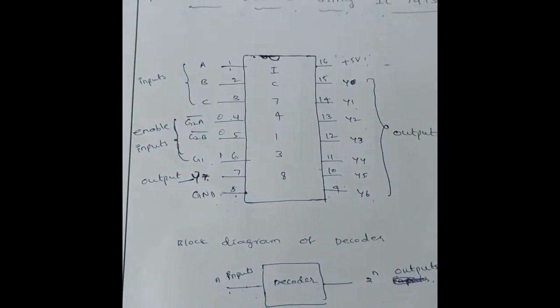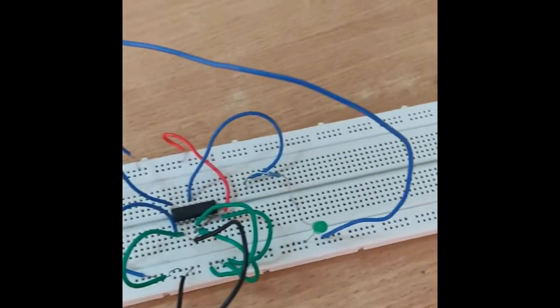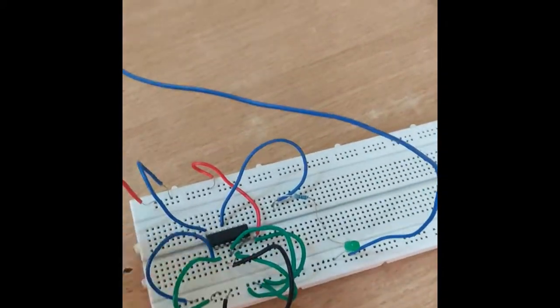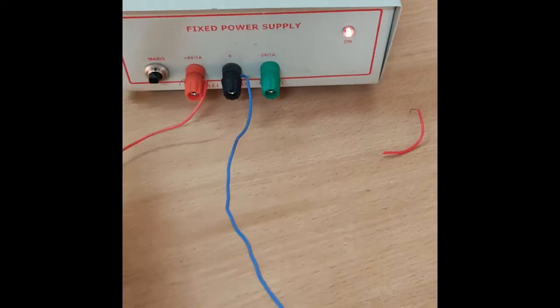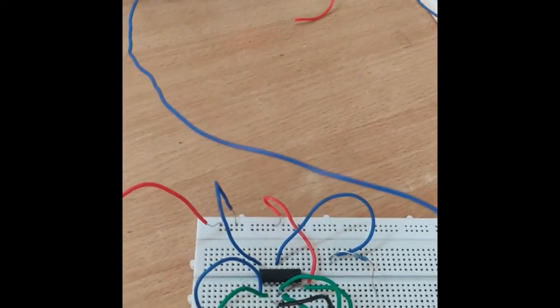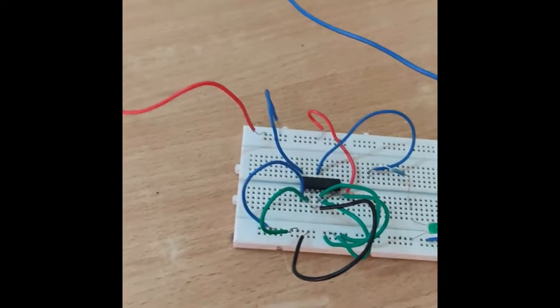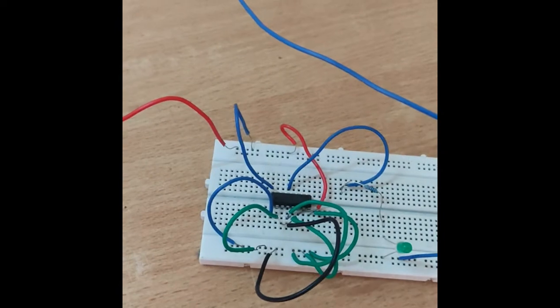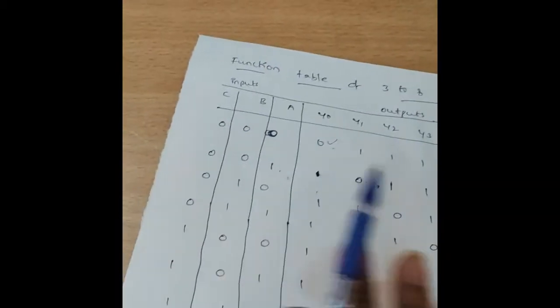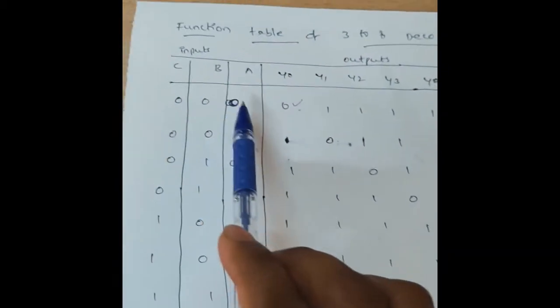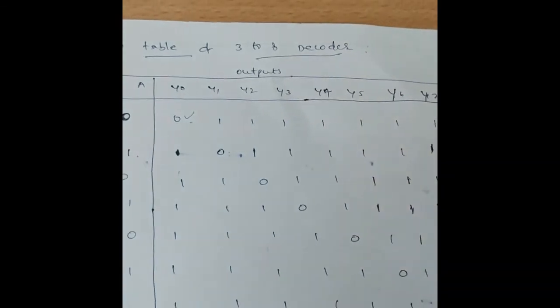This complete circuit diagram is connected on the breadboard. Let's switch on the fixed power supply. This is the function table of the 3-to-8 decoder — it has 3 inputs and 8 outputs.